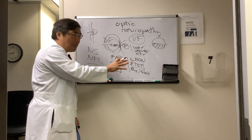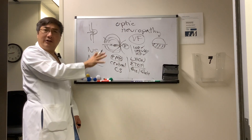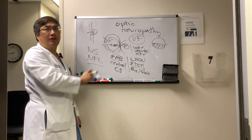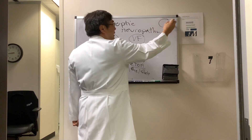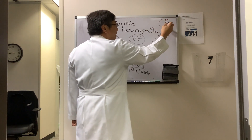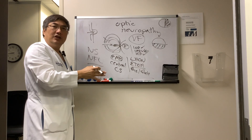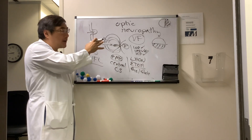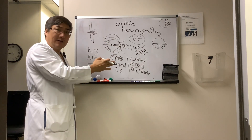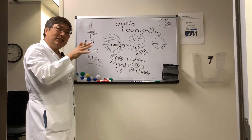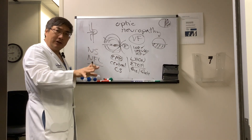But any optic neuropathy can produce any field defect, including central or nerve fiber layer. The one thing it cannot do is respect the vertical meridian until it's very, very close to the chiasm. So if it is a monocular optic neuropathy and it is respecting the vertical meridian, that lesion is close to the junction of the optic nerve and chiasm.